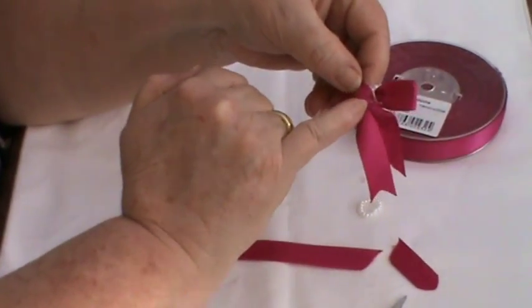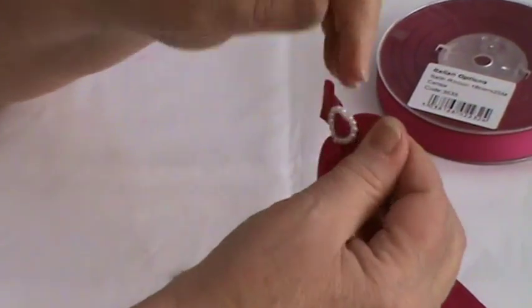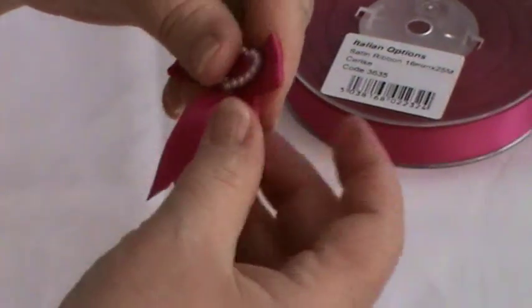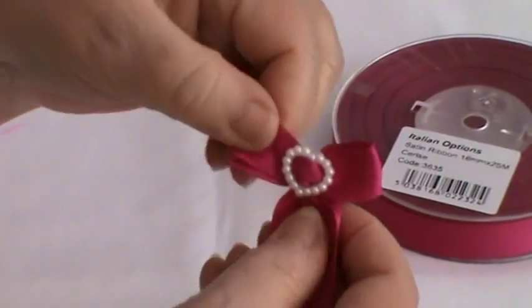All the work goes on at the back of the bow. And it really is a question of lining up, pulling them into place, preferably whilst the glue is still warm enough for it to be malleable.